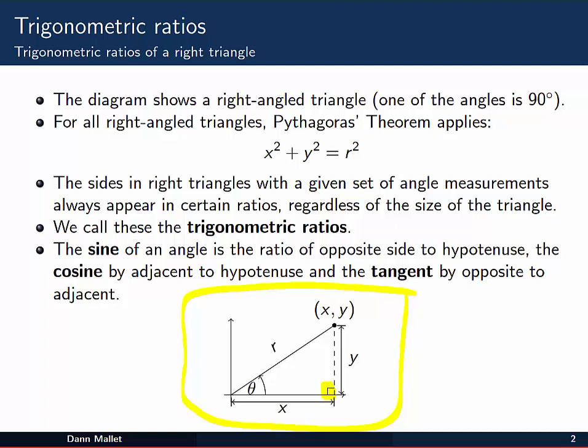Now remember that for all right angle triangles, Pythagoras' theorem applies. So in this picture, the x length here, or the x coordinate perhaps there, squared plus this length y, the height of the triangle, squared, will be equal to the square of this length here, the length of the ray from the origin to some coordinate xy, a point in the Cartesian plane. x squared plus y squared equals r squared.